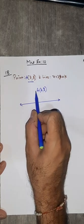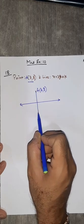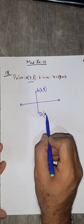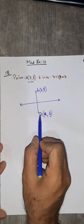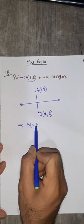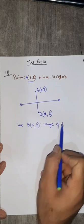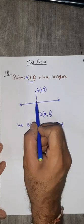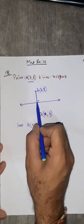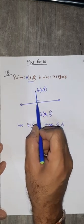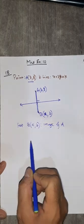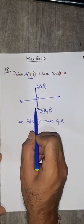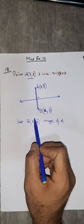So indirectly, this becomes the perpendicular. Let me call this as point B. The image of A means two things: the midpoint of AB is on this line (number 1), and the line segment AB is perpendicular to the given line. If this distance is 2 units, then that is also 2 units. Point on the other side at the same distance — that's what we understand by image in general.